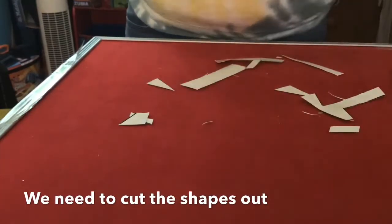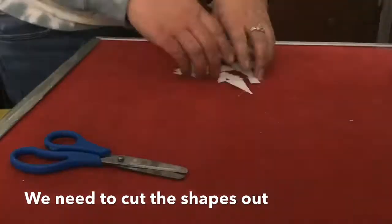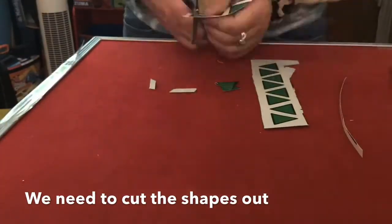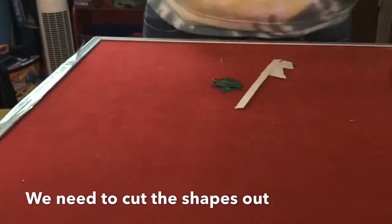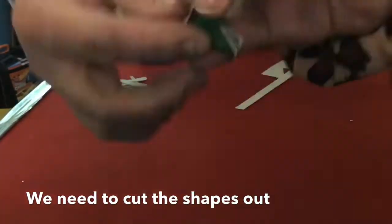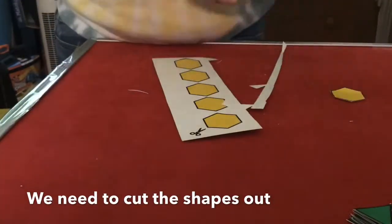We need to cut the shapes out, so that's what I'm doing. Make sure you cut along the black line so the shapes stay the same shape that they're supposed to be with the same amount of sides.